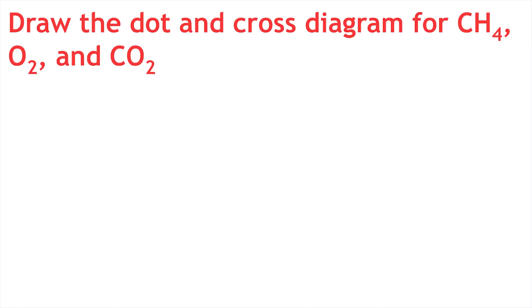Why not have a go at drawing the covalent dot and cross diagrams for methane, oxygen, and carbon dioxide. Have a look at the formulas to determine how many covalent bonds you will need between each of the atoms involved. Pause the video now to wait for the answer.